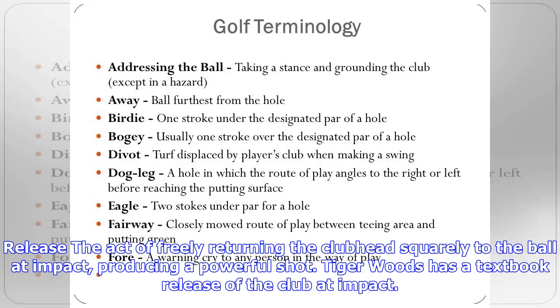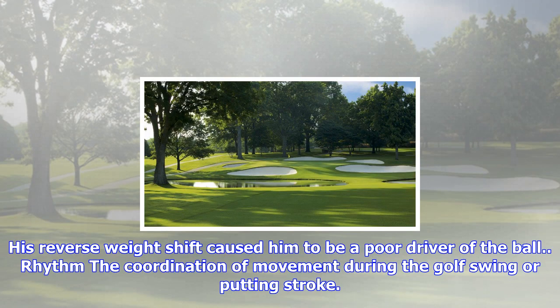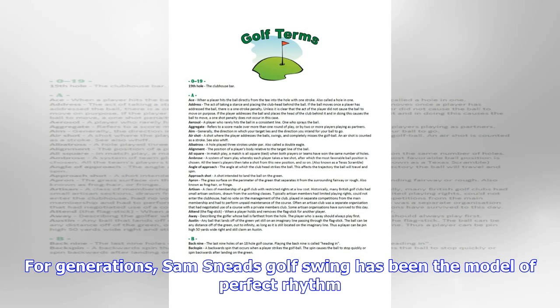Outside to inside: a description of a swing path when the club head approaches the ball from outside the target line and then continues to the inside of that line following impact. His outside-to-inside swing path allowed him to hit his approach shot very near the pin, which was cut on the right side of the green.